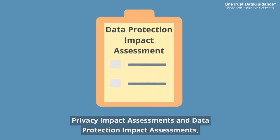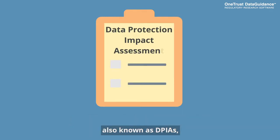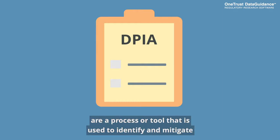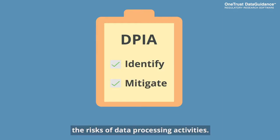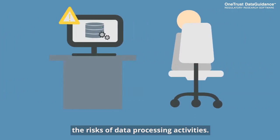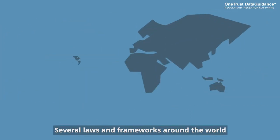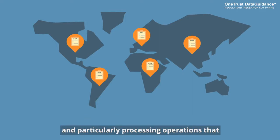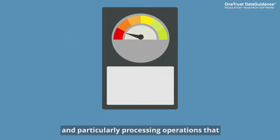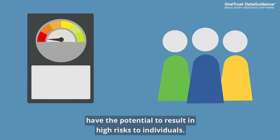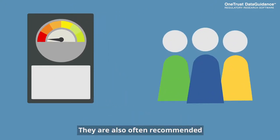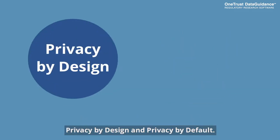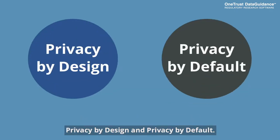Privacy Impact Assessments and Data Protection Impact Assessments, also known as DPIAs, are a process or tool used to identify and mitigate the risks of data processing activities. Several laws and frameworks around the world require these assessments for certain types of processing, particularly operations with the potential to result in high risks to individuals. They are also often recommended and considered a key tool within the concepts of privacy by design and privacy by default.